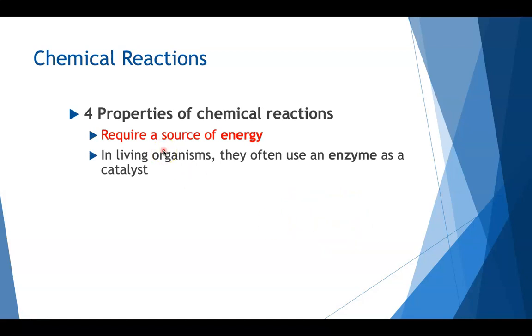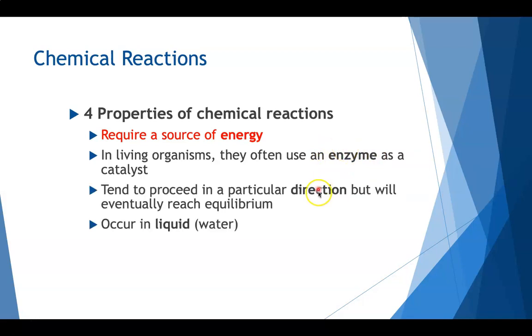With these chemical reactions, they're all going to require some type of energy, so some source of energy, which if we're baking a cake, that energy would be heat. In living organisms, these reactions require an enzyme, which will help to speed up the process. And then also, these reactions tend to occur in one direction. So once we go in that direction, we don't typically go back.